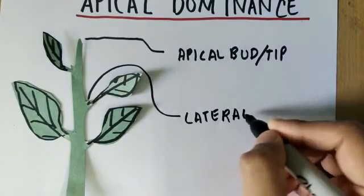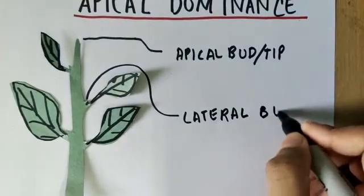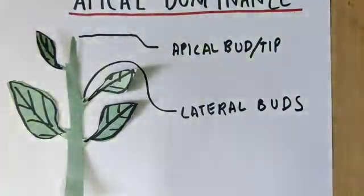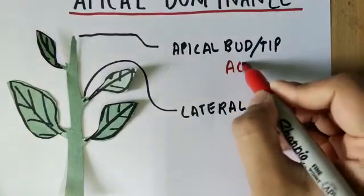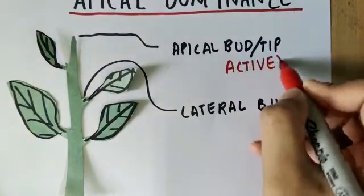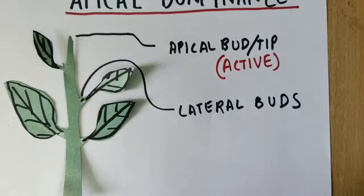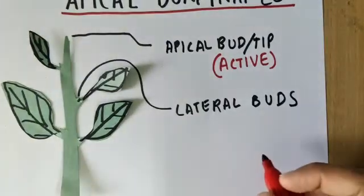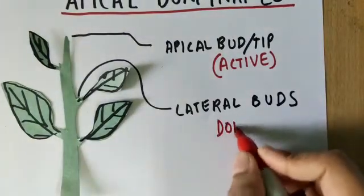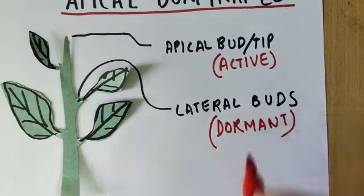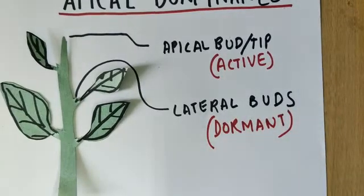Apical buds remain active until the plant is alive or the bud remains on the plant. Lateral buds are dormant. They remain dormant until the apical bud is present on the plant.